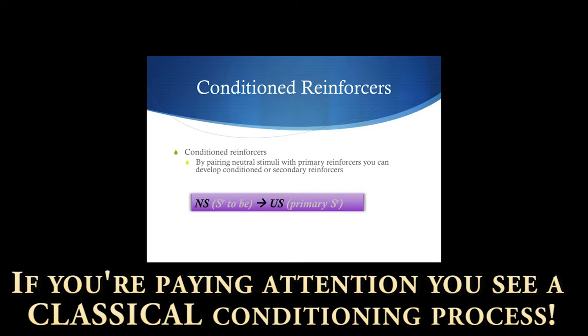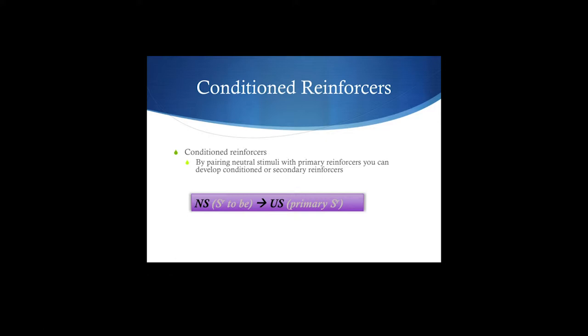The neutral stimulus becomes a reinforcer when it's paired with an unconditioned stimulus. You should recognize this — this is classical conditioning. A neutral stimulus is paired with an unconditioned stimulus, and the unconditioned stimulus is your primary reinforcer: your food, your water, your sex, and so on. And that will develop a conditioned reinforcer. Pretty straightforward.